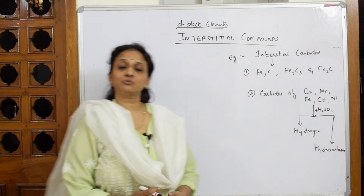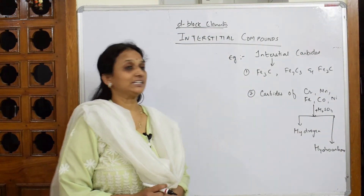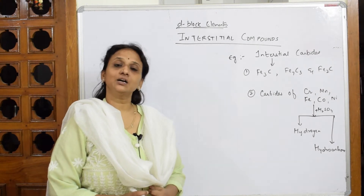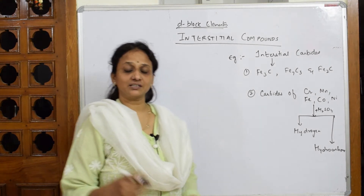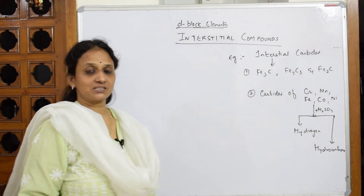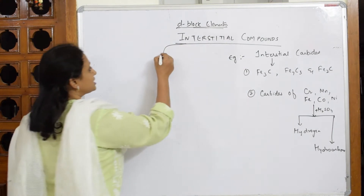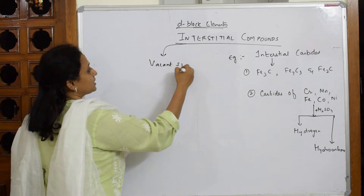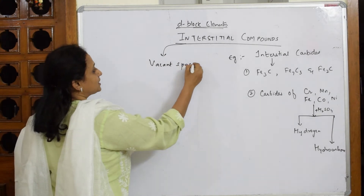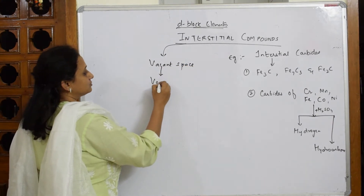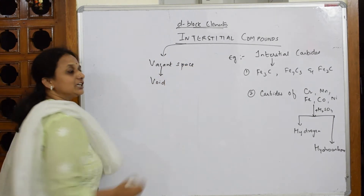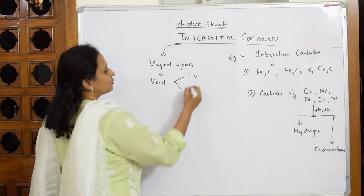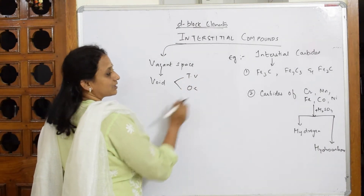One more property of D-block elements is interstitial compounds. In solid state, we have already studied what an interstitial space is. Interstitial is nothing but the vacant space present — the other name given is void. We have already studied there are two types of voids: tetrahedral void and octahedral void.